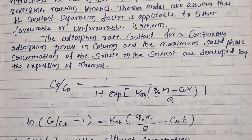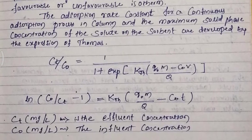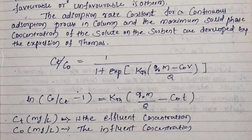The Thomas model equation is: Ct/C0 = 1 / (1 + exp(kth(q0·m − C0·φ) / Q)). Rearranged: ln(C0/Ct − 1) = kth·q0·m/Q − kth·C0·t.